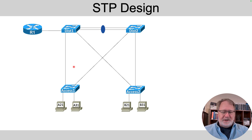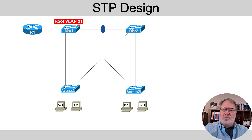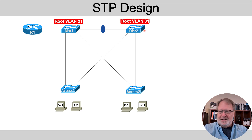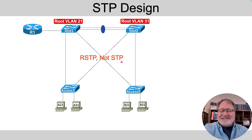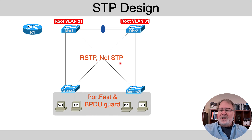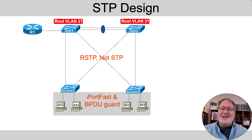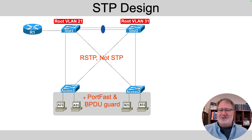For spanning tree, the instructions say to make dist1 the root switch in VLAN 21 and dist2 the root switch in VLAN 31 — I did that to give you variety and make sure you can exercise the commands. Make sure to use RSTP rather than STP. Finally, on those access ports, it's typical to enable PortFast and BPDU guard, and the instructions describe that concept, pointing to those features.